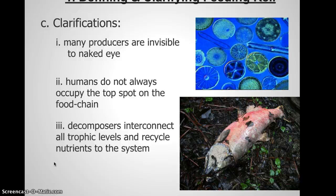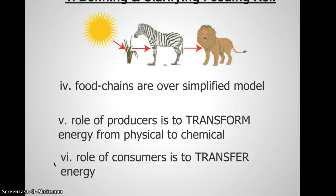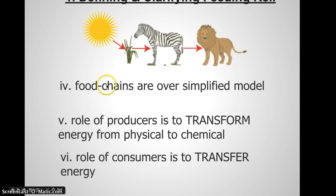In addition to the nutrients decomposers release back into the environment, they also utilize and capitalize on energy that otherwise would be wasted to the ecosystem. Part of the incredible job of producers is to change light energy and transform it from physical into chemical. Without that original transformation, all the other parts of the food web would collapse.